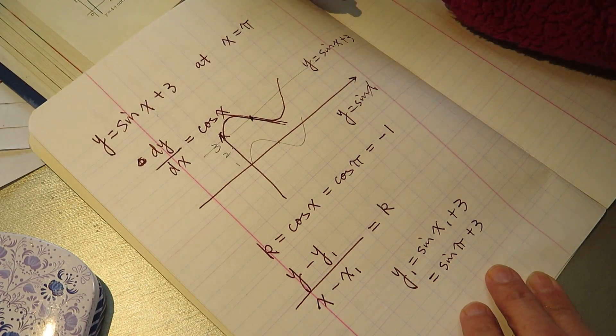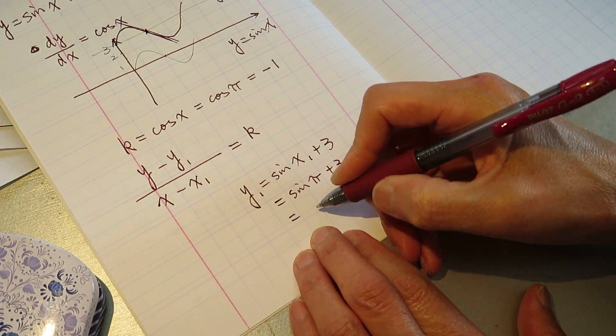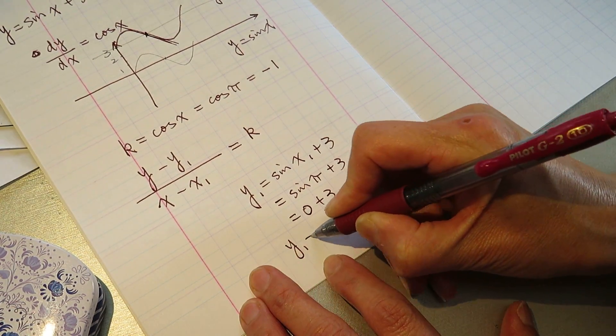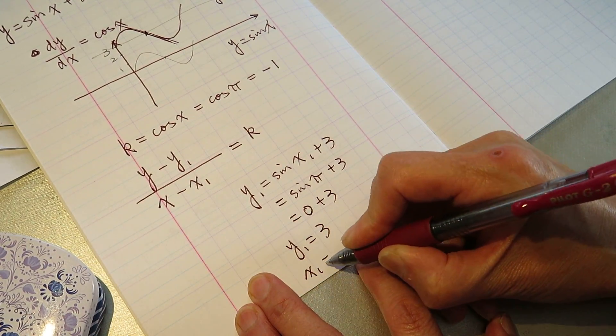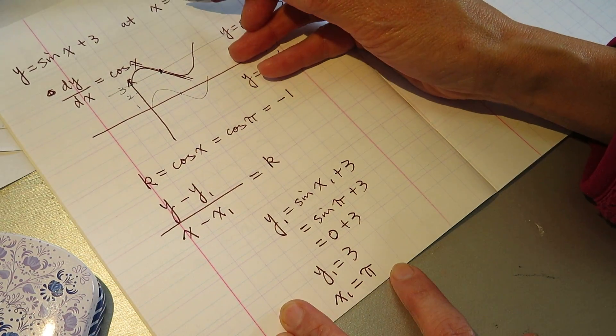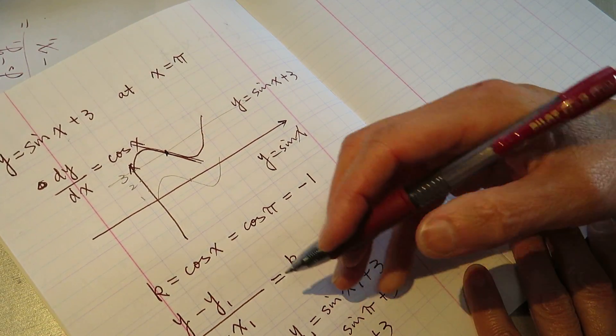Sine pi equal to 0, so 0 plus 3. So y1 equal to 3, so y1 equal to 3, and x1 equal to pi, which is given here, x1 equal to pi. So we plug this one back in, I write it here.